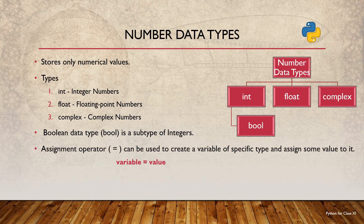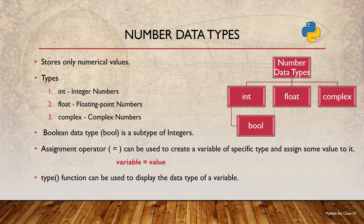Now I am considering the assignment operator. The assignment operator, the equal to symbol, is used to create variables of a specific type and also to assign values to them. The syntax is: variable name on the left side of the equal to symbol, and the value to be assigned on the right side. I am also introducing a built-in function in Python — type() — which is used to return the type of a given variable.